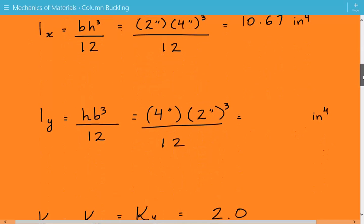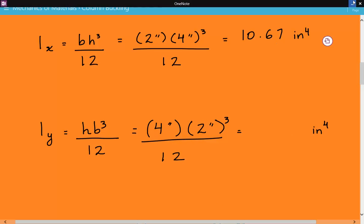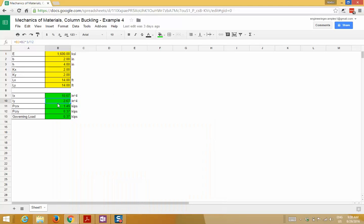The moment of inertia about the Y axis is Iy = hb³/12, so that's 2.67 inches to the fourth.